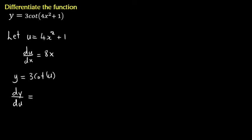So dy du, differentiating a cot simply gives you a negative cosec. Okay? I'll show you how that comes about. So this becomes minus 3 cosec square u. Okay? So let me just show you how the cosec is coming about.